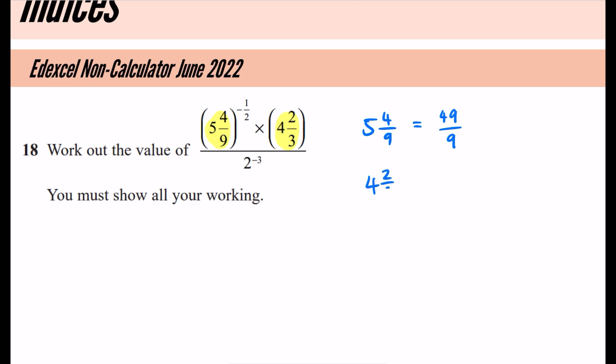And 4 and 2 thirds. Again, 4 times 3 is 12. Add on the 2 is 14. So we get 14 thirds for that part.